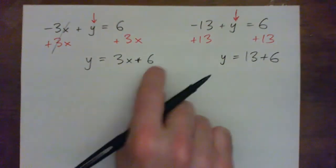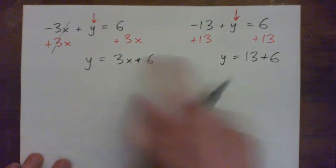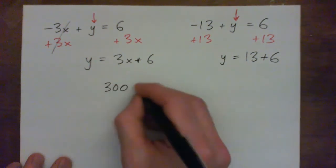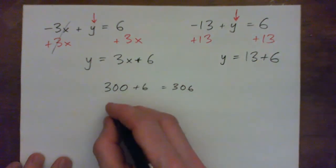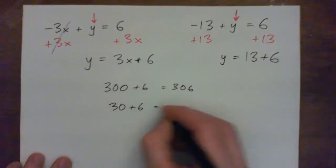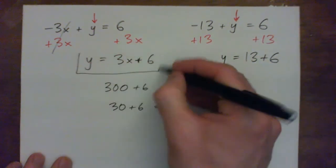Now these are not like terms so you can't add them together. We don't know what x is. X could be a hundred in which case we've got 300 plus 6, 306. Or x could be 10 in which case we have 30 plus 6 which is 36. But until we know what x is we can't add these things together and so that's just the answer there.